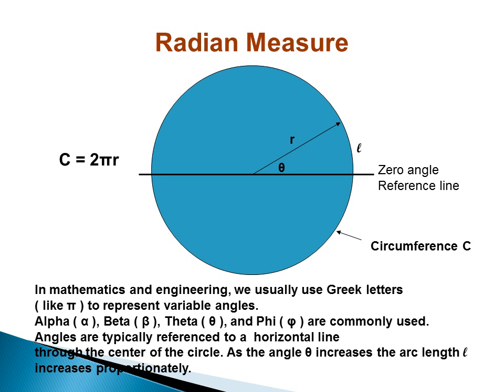In mathematics and engineering, we usually use Greek letters to represent variable angles. Alpha, beta, theta, and phi are commonly used. Angles are typically referenced to a horizontal line through the center of the circle. As the angle theta increases, the arc length increases proportionately.